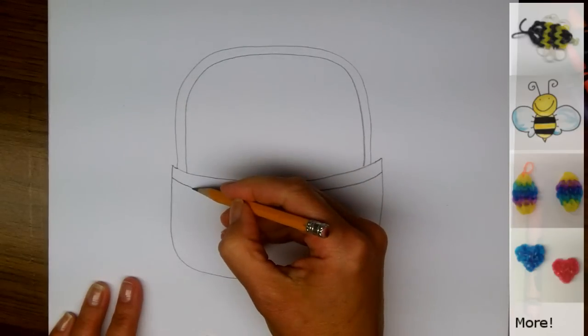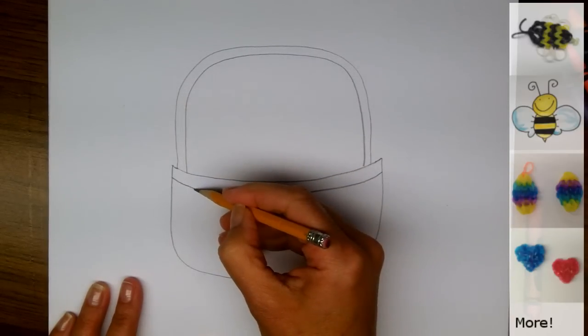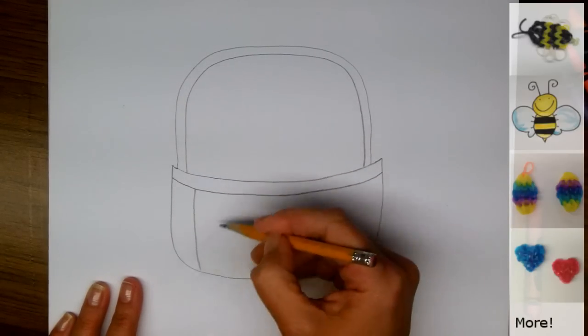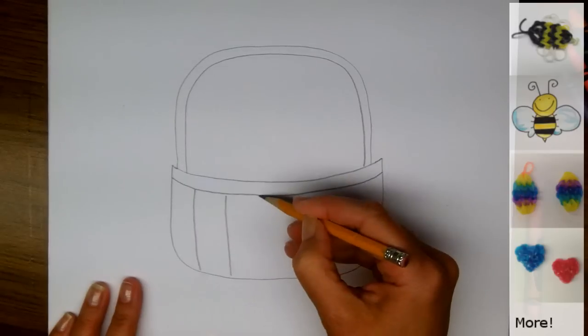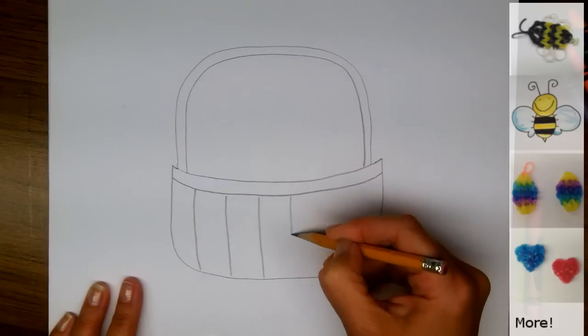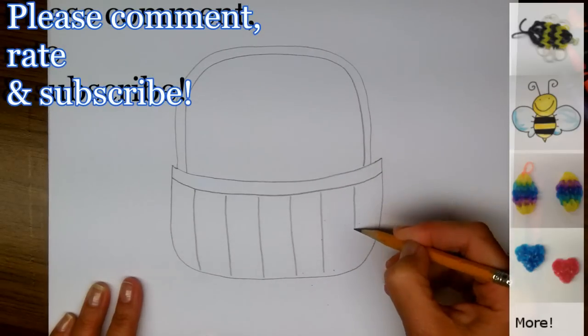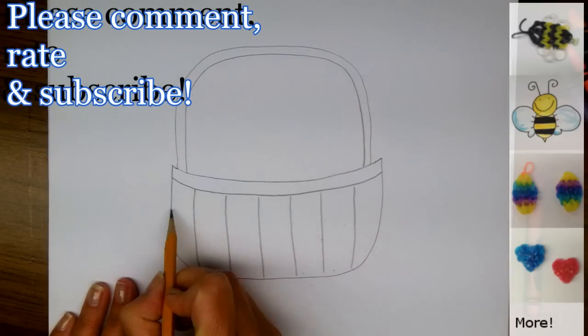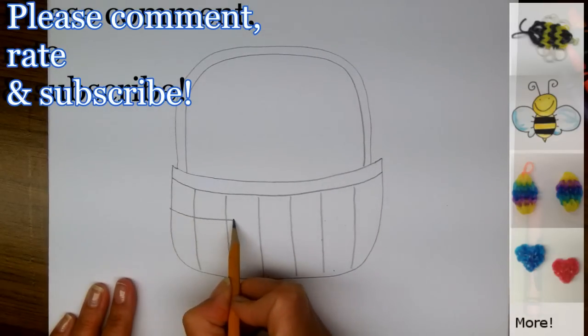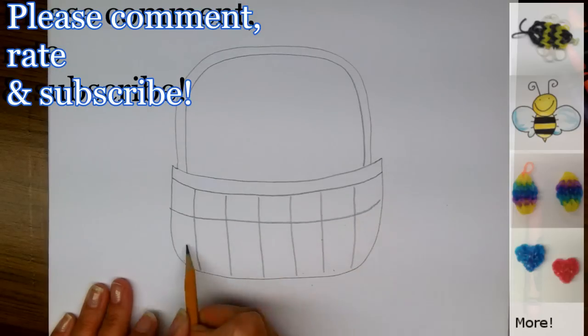Then I'm going to draw the weave of the basket, and the way I'm going to do that is just by making some lines that go from the top to the bottom, like that, and then some lines that go from side to side like that.